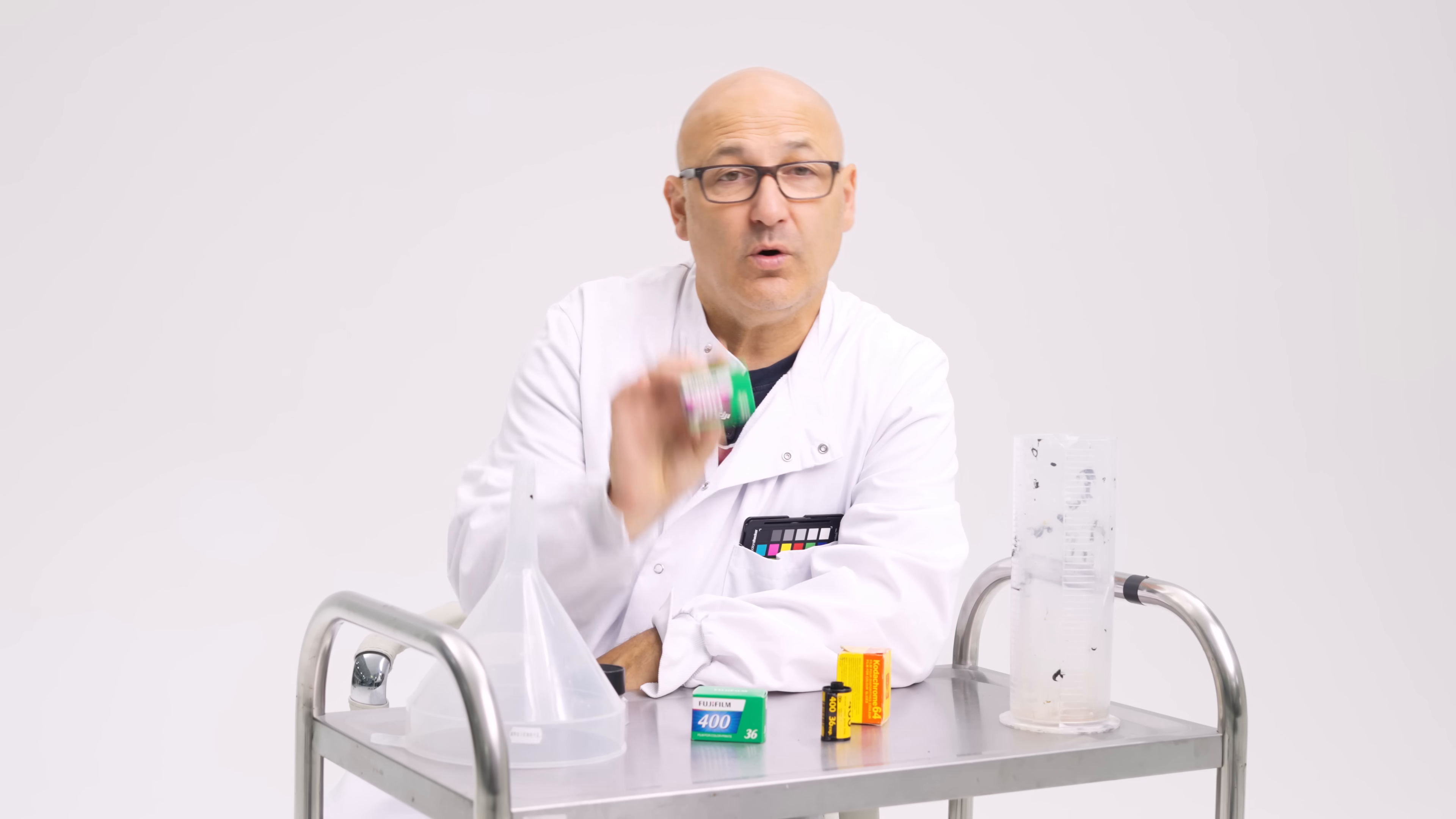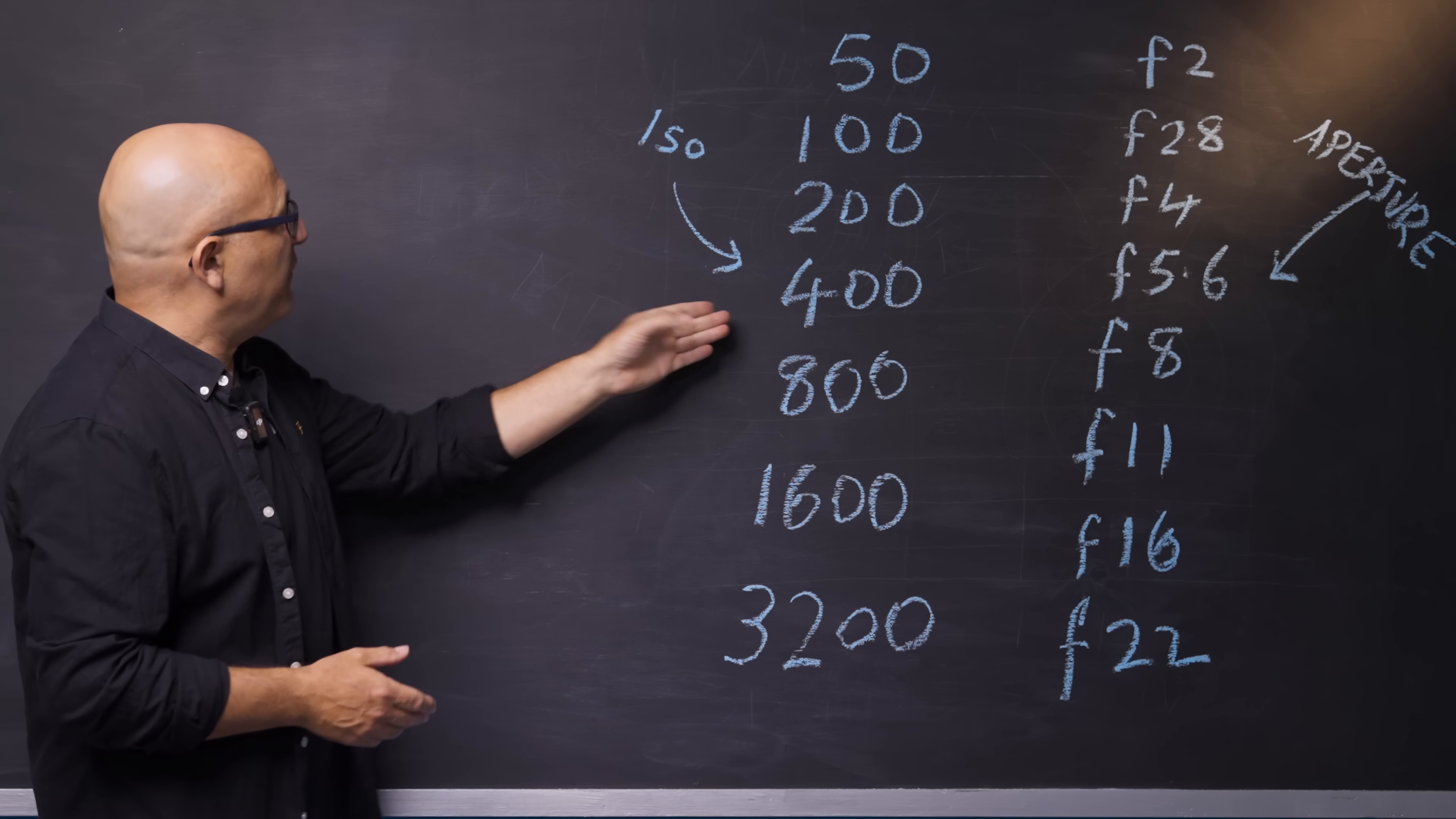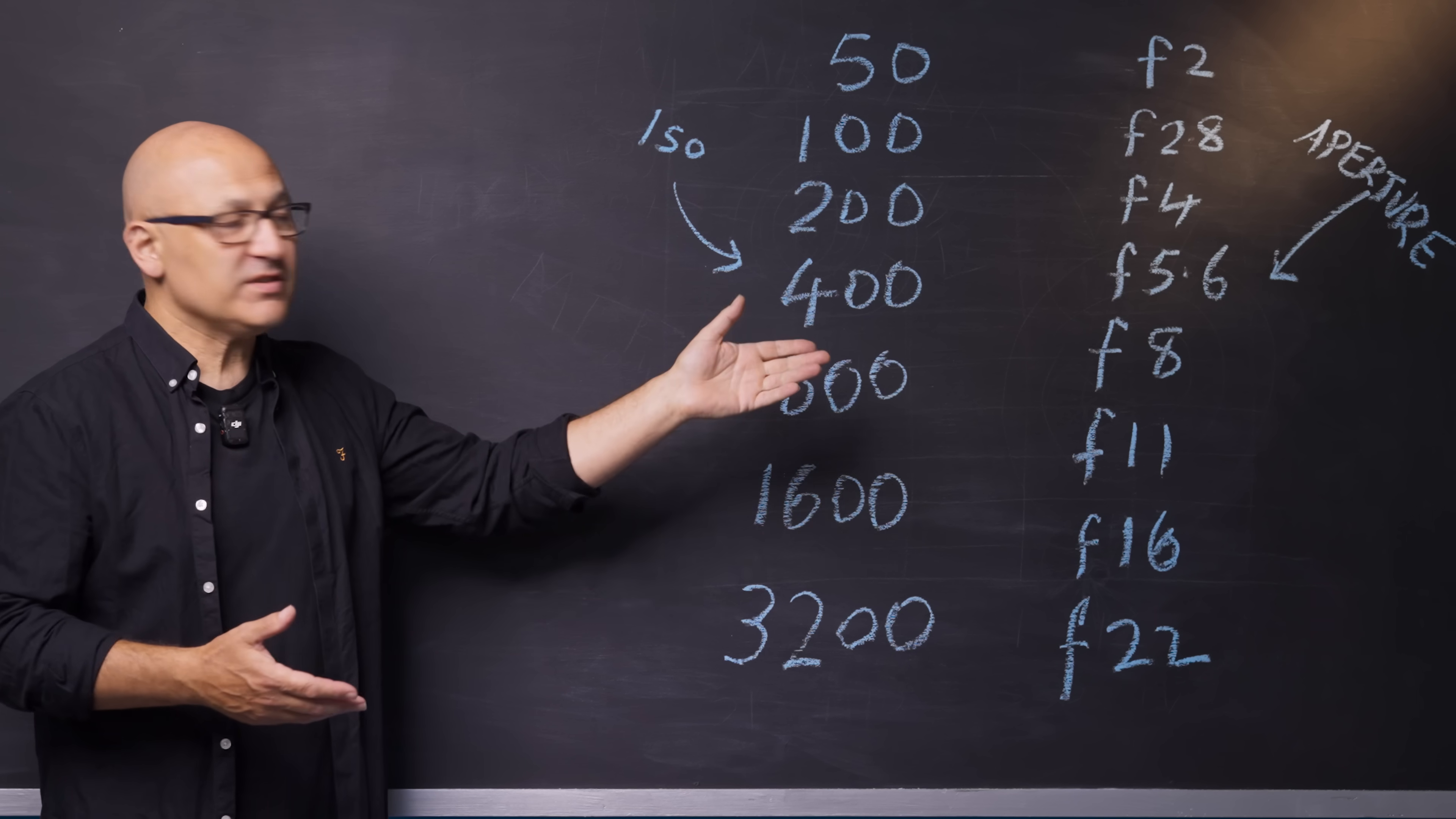First though, we still have ISO numbers. 100 ISO is twice as sensitive to light as 50 ISO. 400 is twice as sensitive as 200. It's double, double, double, half, half, half, and so on.